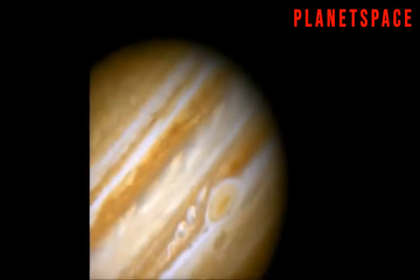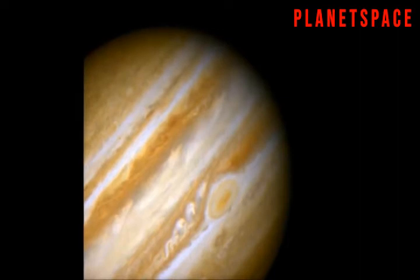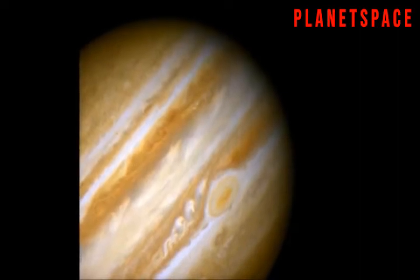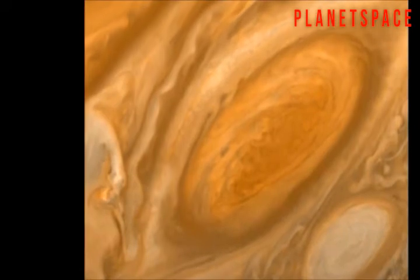One storm that we know about can be seen from Earth. We call it the Great Red Spot because that's what it looks like, and it has been going on for at least 200 years.